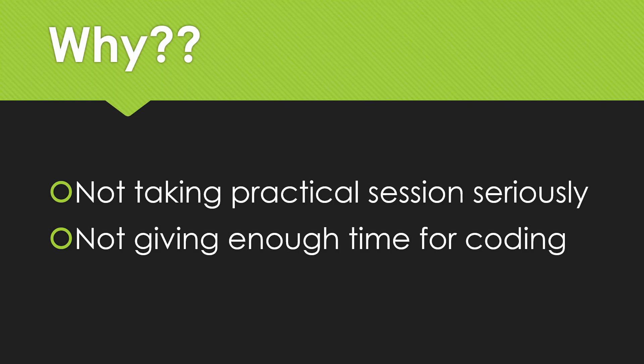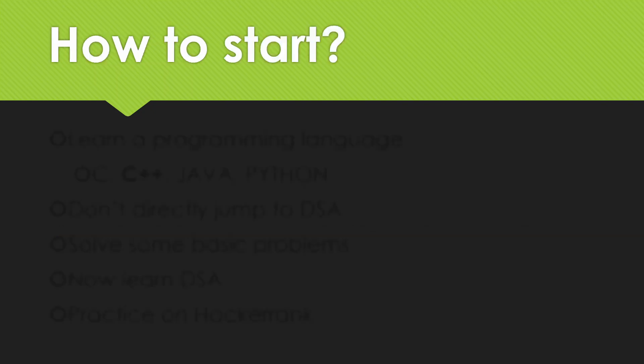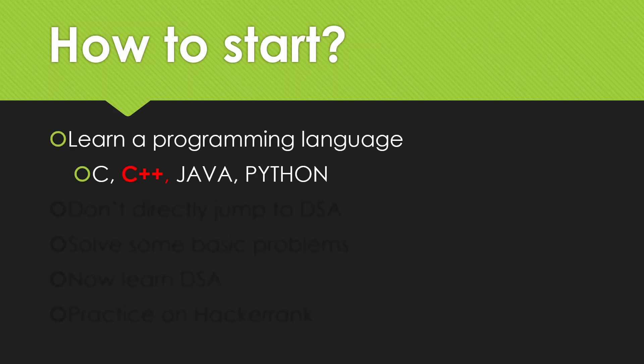Now let's see the steps to improve logic building. These steps are totally from my experience. The first step is to learn a programming language. I would say learn one from these four: C, C++, Java, and Python. My preference is C++ because if you find programming very interesting and want to go into competitive coding, C++ is the language most competitive programmers use.